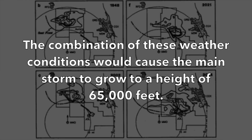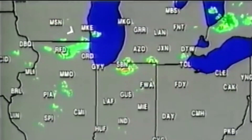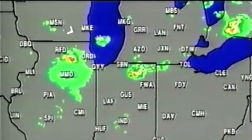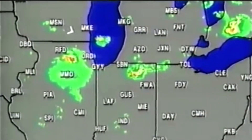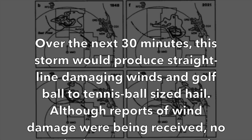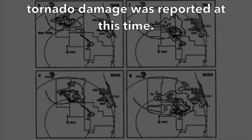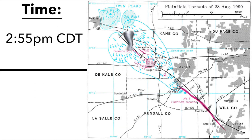The combination of these weather conditions caused the main storm to grow to a height of 65,000 feet. On radar, the storm looked like a classic supercell, including a hook echo, and was exhibiting a right-turning motion — meaning the storm was moving right of the upper-level steering winds that would normally drive it east. Over the next 30 minutes, this storm would produce straight-line damaging winds and golf-ball- to tennis-ball-sized hail. Although reports of wind damage were being received, no tornado damage was reported at this time. A few brief tornado touchdowns occurred in rural southern Kane County, however — a precursor of what was to come.